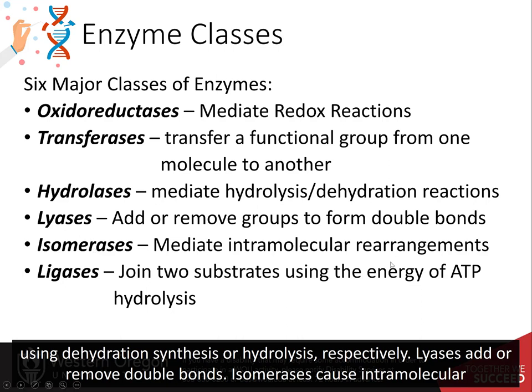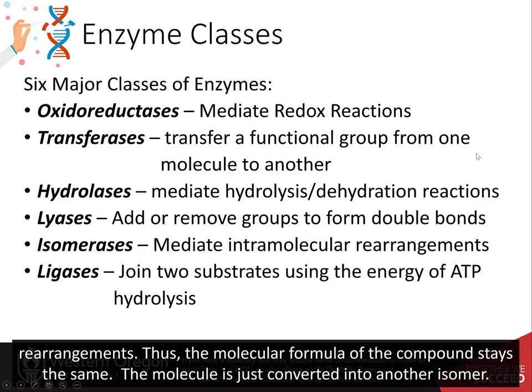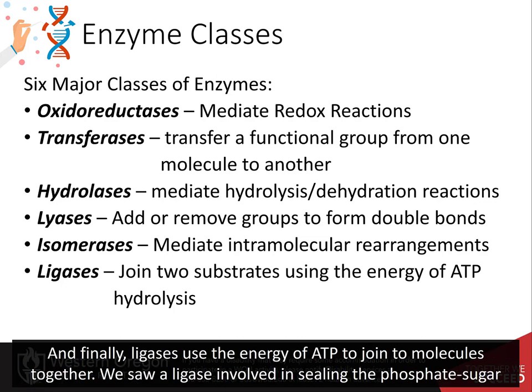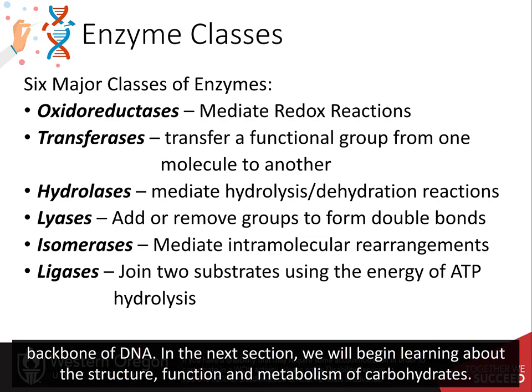Lyases add or remove double bonds. Isomerases cause intramolecular rearrangements — thus, the molecular formula of the compound stays the same and the molecule is just converted into another isomer. And finally, ligases use the energy of ATP to join two molecules together. We saw a ligase involved in sealing the phosphate-sugar backbone of DNA.